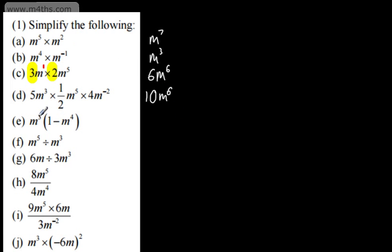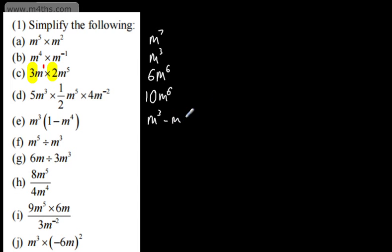We're asked to simplify the following. For me this is in a nice particular form, but all we're going to do is expand it out. So m to the power of 3 multiplied by 1 is just m to the power of 3. Then we subtract m to the power of 3 multiplied by m to the power of 4 — we add the powers, giving m to the power of 7.